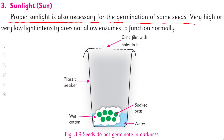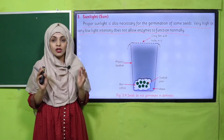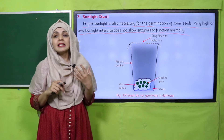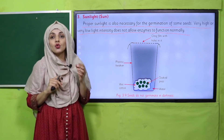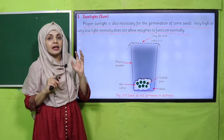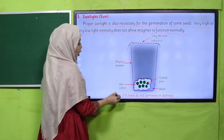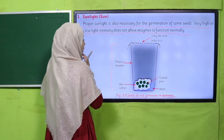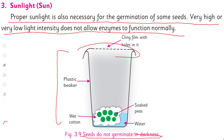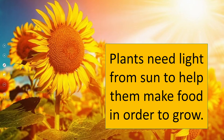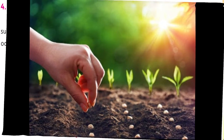Third factor: sunlight. Proper sunlight is also necessary for the germination of some seeds. Very high or very low temperature intensity does not allow enzymes to function normally. When a seed is underground, sunlight helps maintain temperature, because seeds grow better in warmth. Most seeds do not grow at low temperatures, so they need proper sunlight for germination. Seeds placed in a dark container — even with wet cotton and holes in the cling film — will not germinate due to darkness.